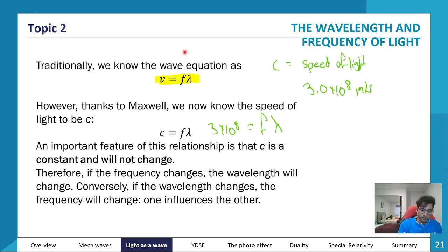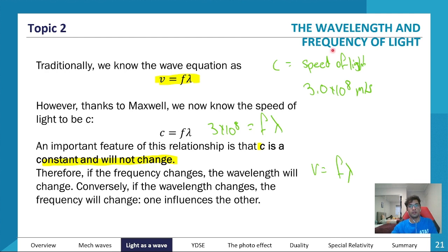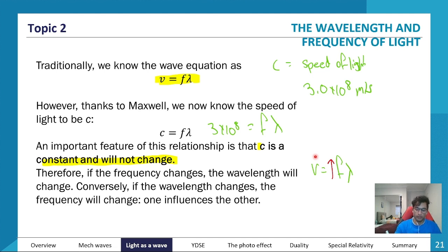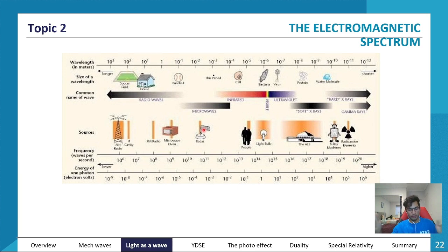The speed of light is always constant. Since velocity equals frequency times wavelength and the velocity is constant, if we increase the frequency the wavelength must decrease, and vice versa. If we increase the wavelength the frequency decreases, because frequency times wavelength must remain constant at the speed of light.